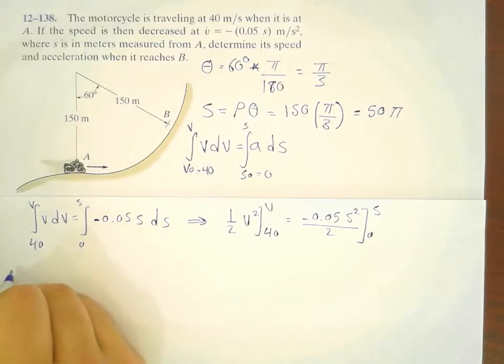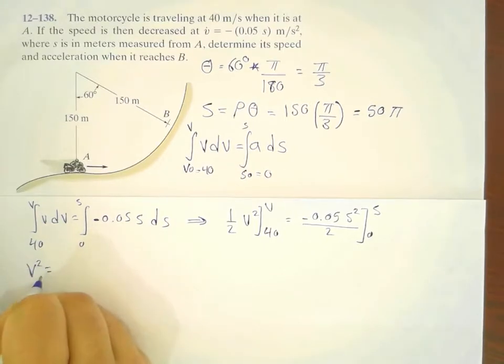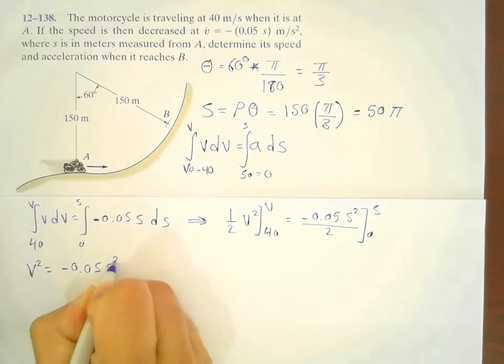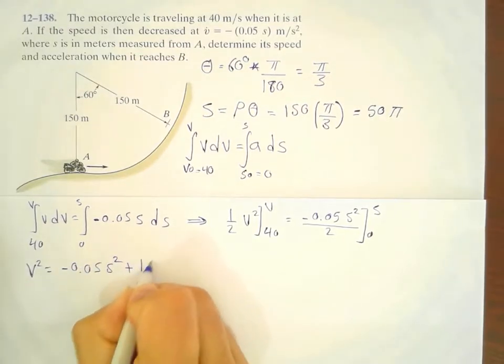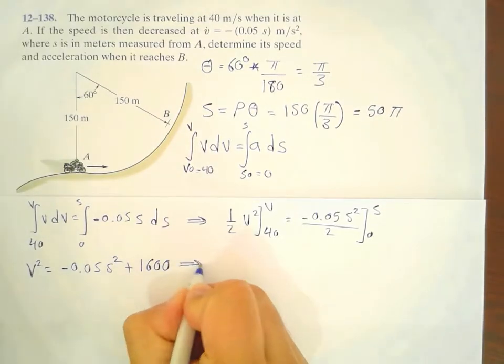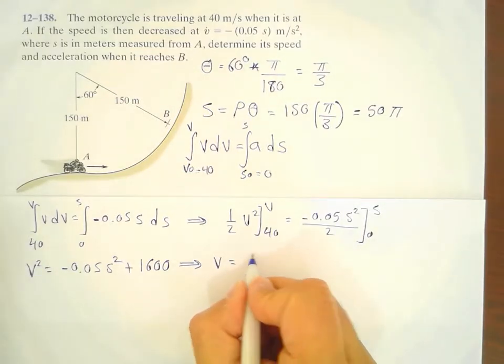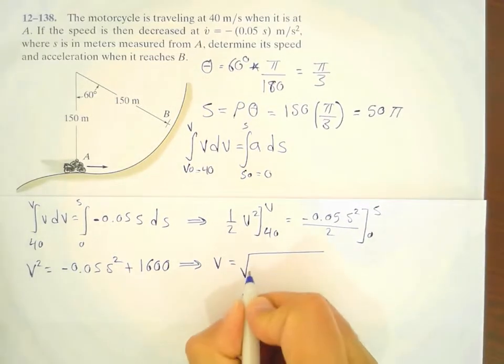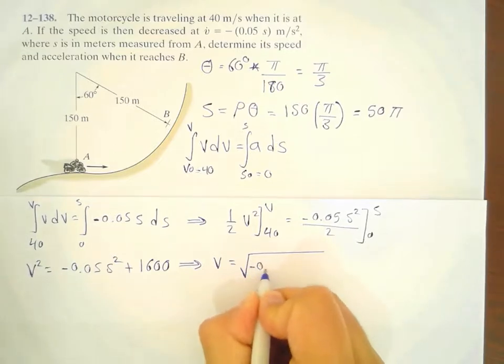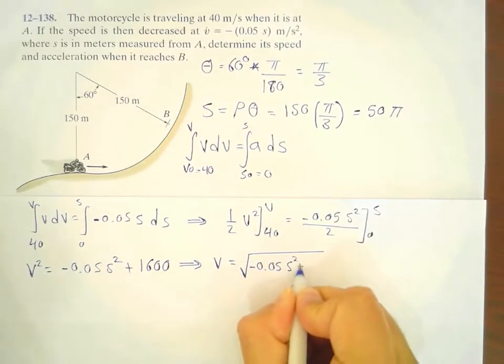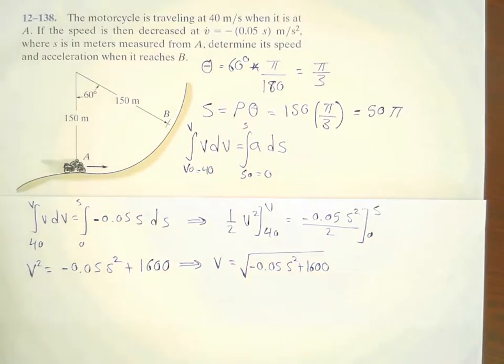So, substituting and rearranging everything would give us V squared equals to minus 0.05 S squared plus 1600. And the ultimate relationship between the velocity and the position would be this value, 0.05 S squared plus 1600.